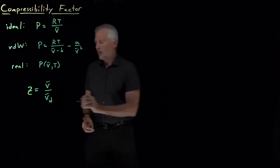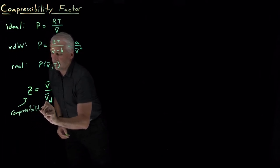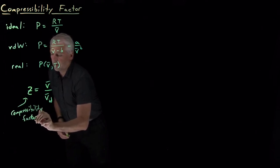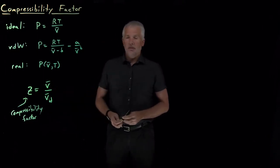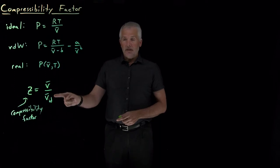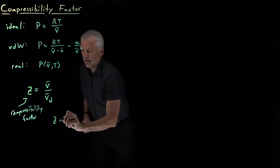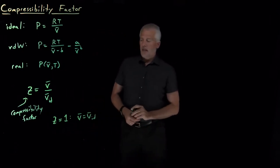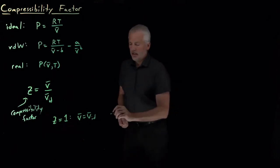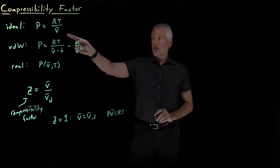The name for that quantity is the compressibility factor, which is a somewhat unfortunate name because we're usually not explicitly talking about the compressibility of the gas. It's most useful to think of it as this measure of ideality. If the volume is exactly the same as the ideal gas law would have predicted, then Z equals 1, V equals V_ideal, the gas is behaving perfectly ideally, and PV equals nRT works just fine.